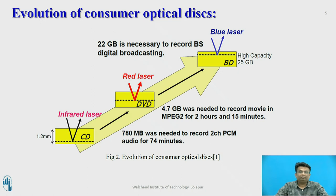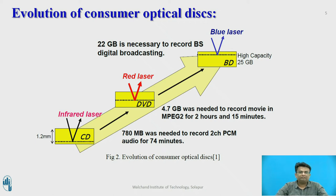The evolution of the consumer optical disc: In the beginning, CDs were invented. These are compact discs which operate on an infrared laser used to read the disc. The maximum capacity of a CD is 780 MB, which is used to record 2-channel pulse-coded modulated audio for up to 74 minutes.